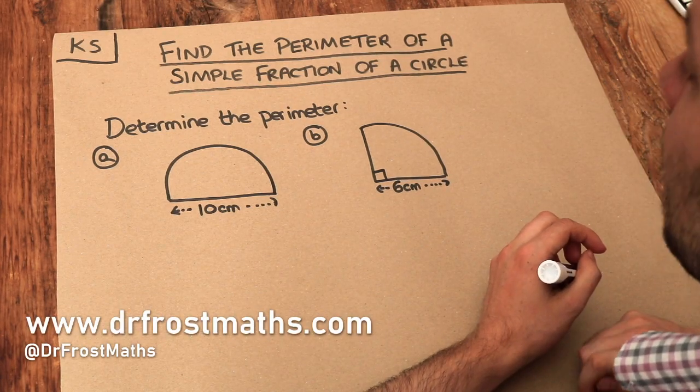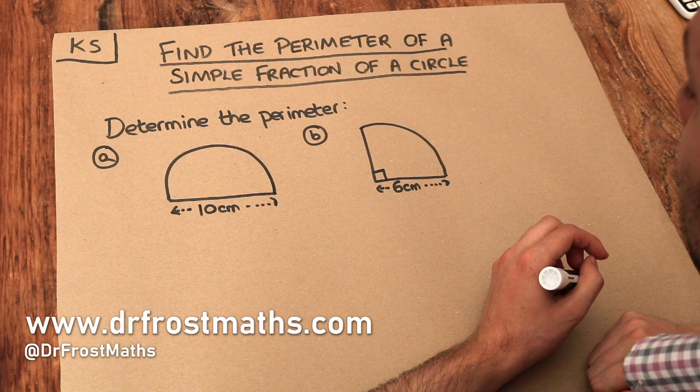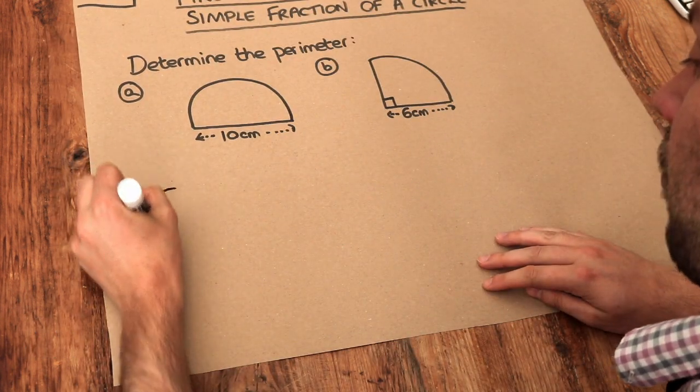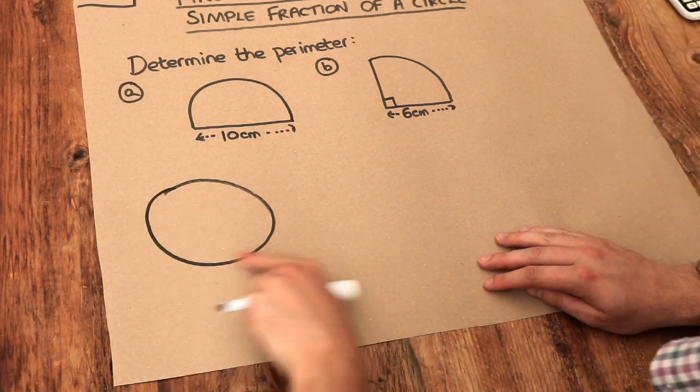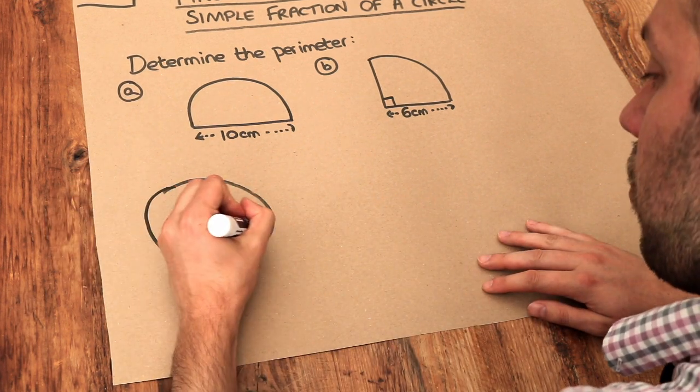Hello and welcome to Dr. Ross Mass's key skill video on finding the perimeter of a simple fraction of a circle. Now in a previous video we saw what the circumference of a full circle was. And remember the circumference of a circle just means the perimeter of the circle. And we had two different formulas.